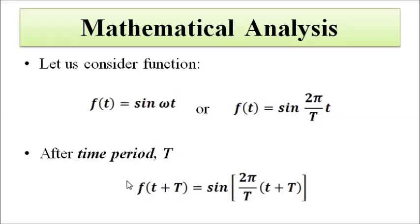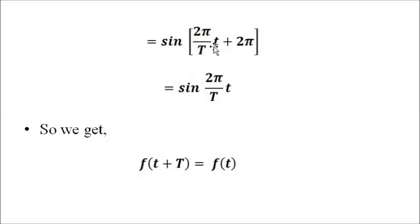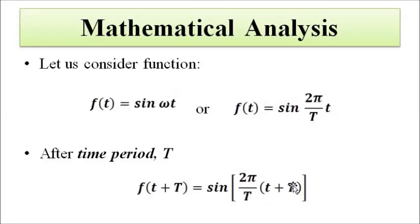Now, what happens after the fixed time period T has passed? We evaluate f(t + T) — adding capital T everywhere there is a small t. So it becomes sin(2π/T · (t + T)), which expands to sin(2π/T · t + 2π). Here the T's in 2π/T multiplied by T cancel out, since one is in the numerator and the other in the denominator, leaving us with sin(2π/T · t + 2π).